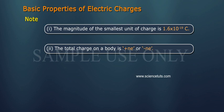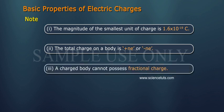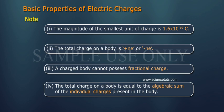Note 2: The total charge on a body is plus ne or minus ne. Note 3: A charged body cannot possess fractional charge. Note 4: The total charge on a body is equal to the algebraic sum of the individual charges present in the body.